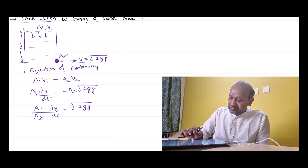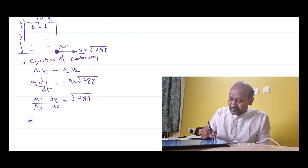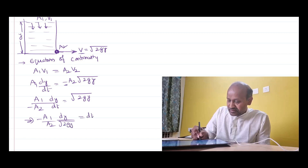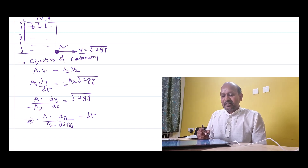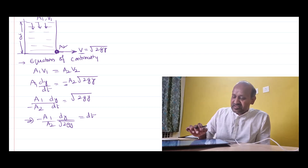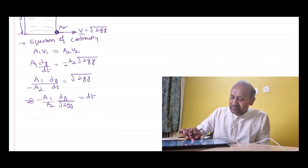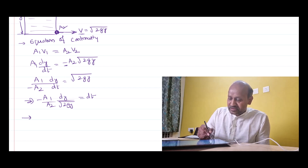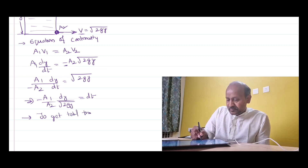Let us write an equation for dt. If I rearrange the terms — the minus sign is there — I get: minus A1/A2 times dy divided by root 2gy equals dt. I have just kept dt on one side and all other terms on the other side of the equation. That is the small time interval required for the liquid level to fall by a height dy. To empty the tank I need to get the total time, so I shall integrate the equation.